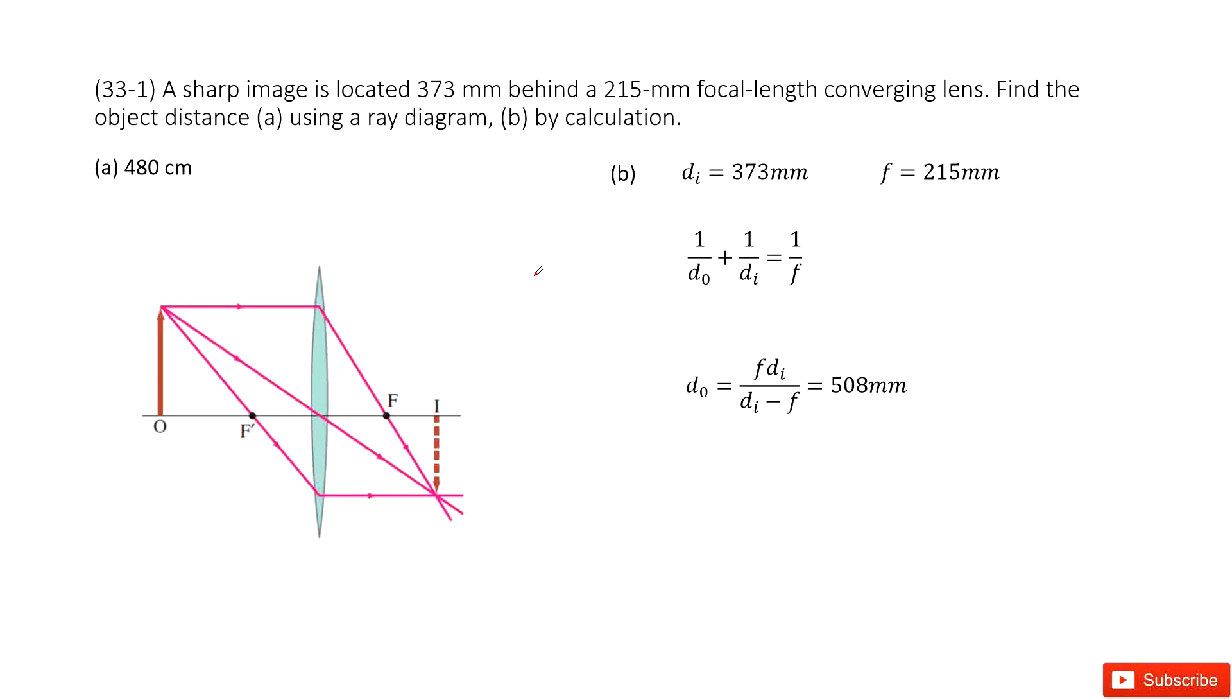You can see we have the converging lens and also the quantity given as the image distance and the focal length. Asked to find the object distance, d0.